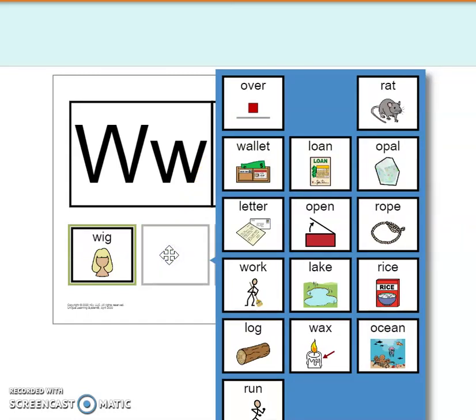All right, let's look at finding another word that starts with W. How about this word here, rat, rat. Do you hear the W sound? W, W, R. No, those are different sounds.